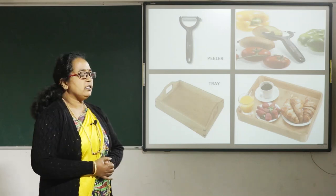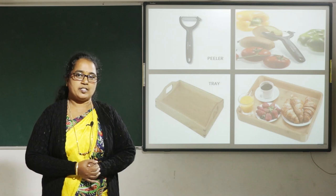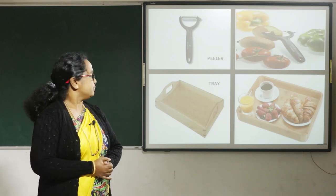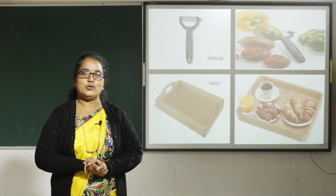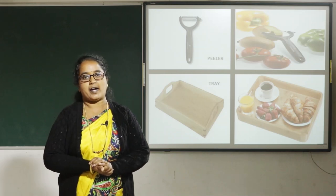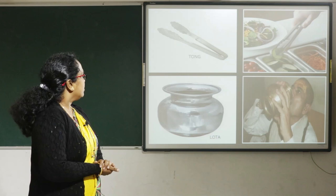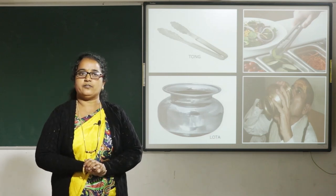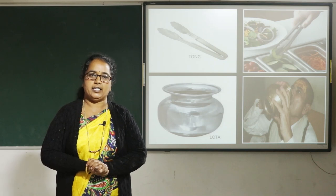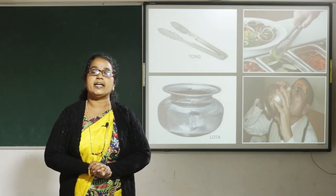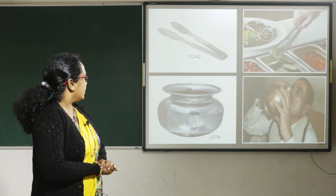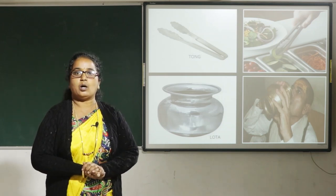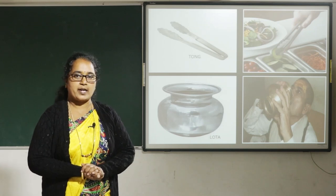Peeler. A peeler is used to remove the skin of some vegetables such as potato and carrot. Trays are usually used to carry plates of food and dishes. Tong. Tongs are a type of tool used to grip and lift objects instead of holding them directly with hands. Lota. A lota is used to drink water or to carry water to wash hands.